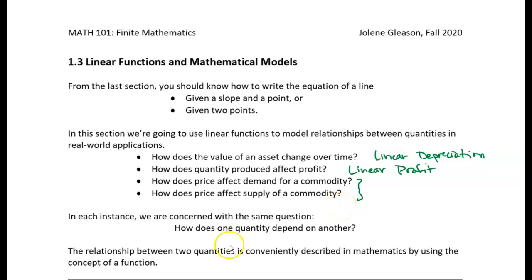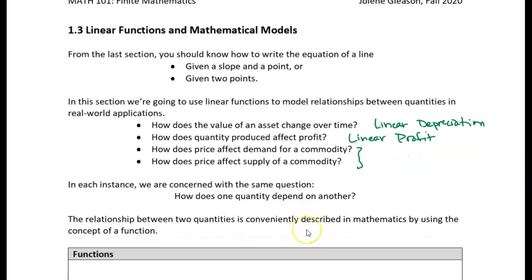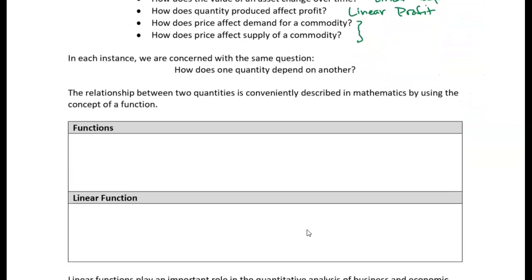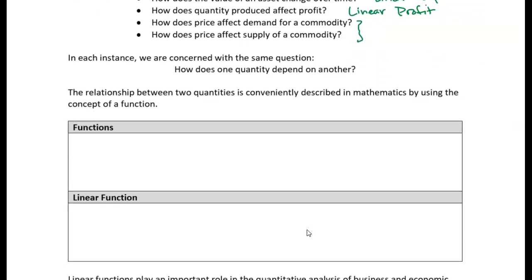So in all these cases, we're just looking at how one quantity depends on another. And we can often model those with a function. And a function is just a rule that assigns each value of X to one and only one Y value. So it has one input. For each input, it has one and only one output. That's how a function is defined.